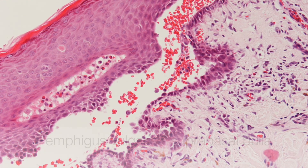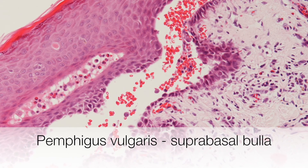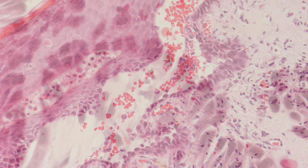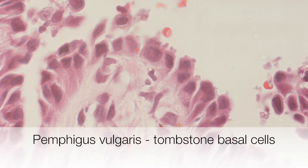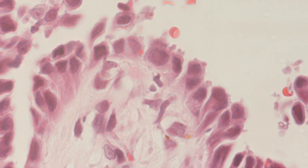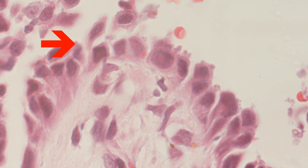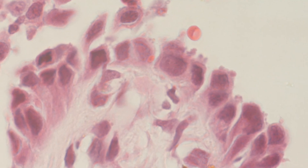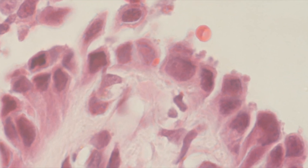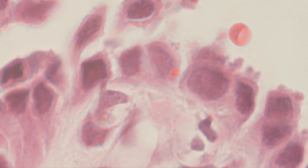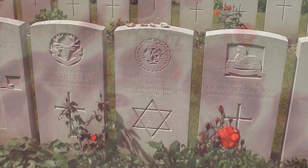Here is a high power view of a suprabasal bulla in Pemphigus vulgaris. This high power view of the base of a bulla shows the basal cells that are still stuck to the upper dermis, but the sides of the basal cells have separated, resulting in an appearance similar to that of tombstones or gravestones.